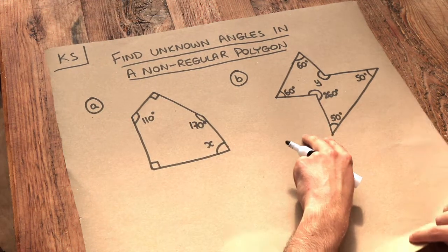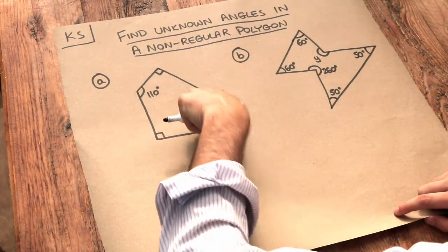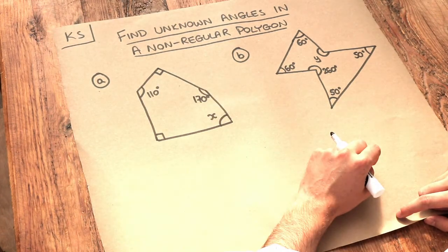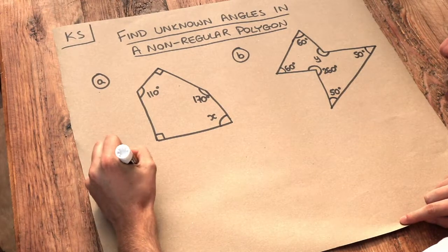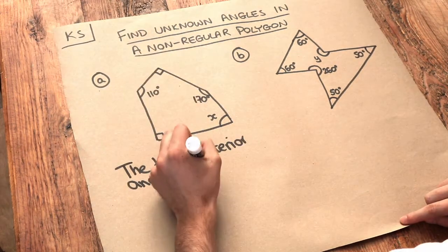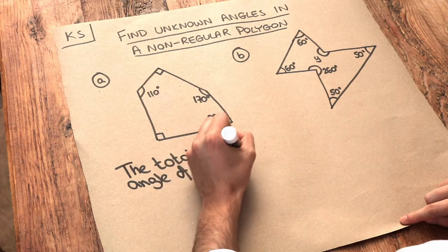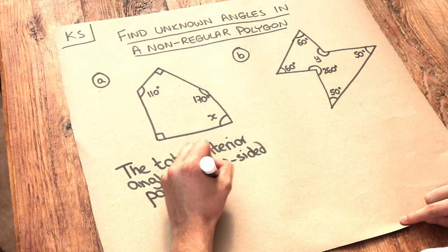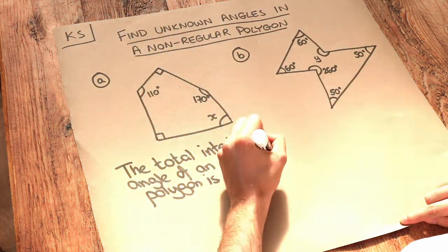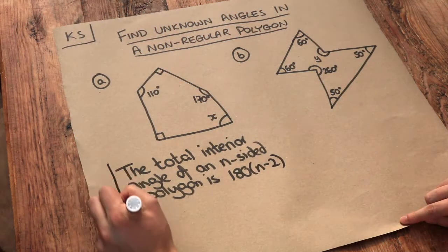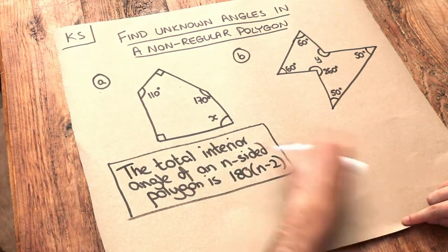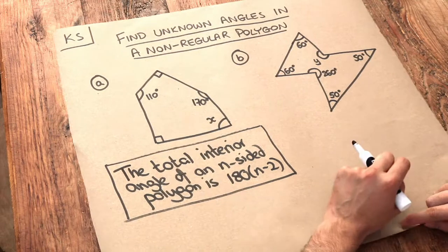Now there's one key formula we need to know here and that's about the total of all the interior angles in a polygon with a given number of sides. So the total interior angle, and by interior angle I mean the angles inside the shape of an n-sided polygon is, and here's the formula: 180 brackets n minus 2. I'm not going to explain why it works in this video, for the moment just accept that is the formula for the total of the interior angles in a polygon.